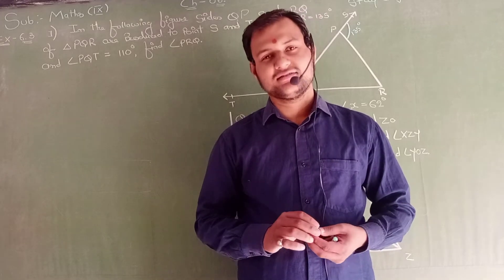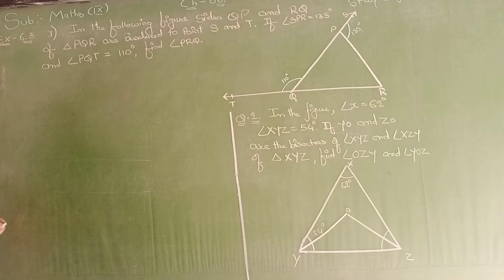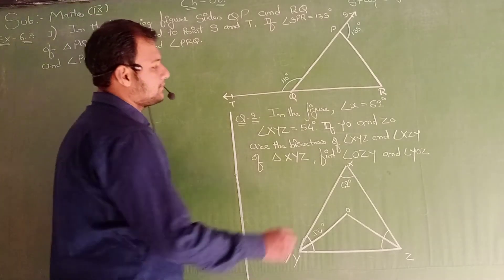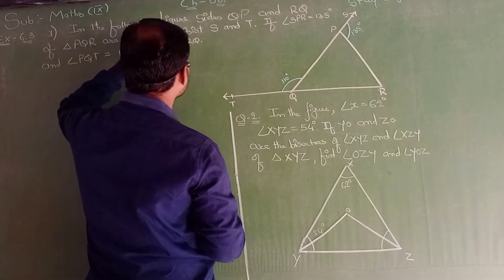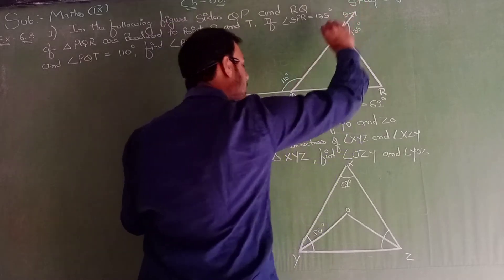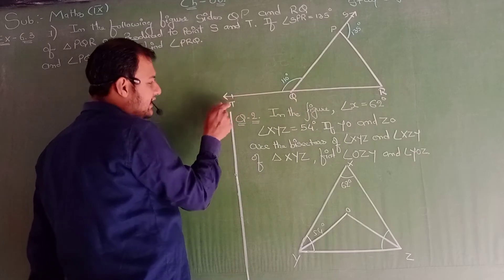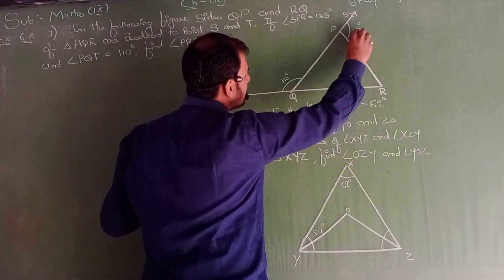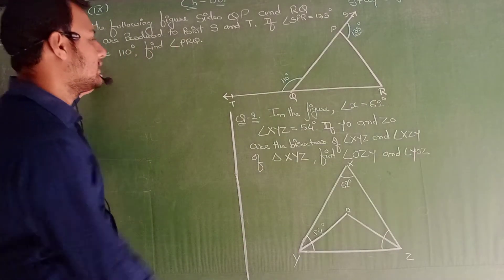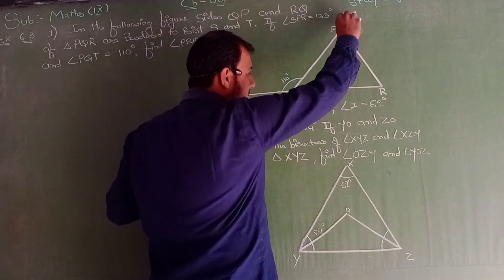Good morning dear students, welcome to the online classes. Today we are going to start Exercise 6.3, first and second question. Please read the question very carefully. In the adjoining figure, side QP and RQ of triangle PQR are produced to points S and T — QP को extend किया गया है S तक और QR को extend किया गया है T तक। If angle SPR is 135° and angle PQT is 110°, find angle PRQ.